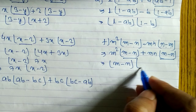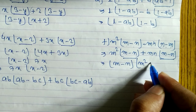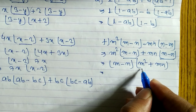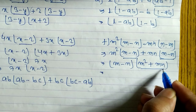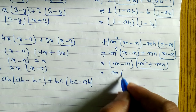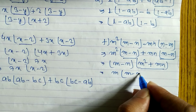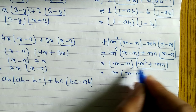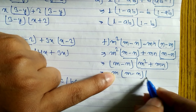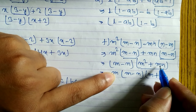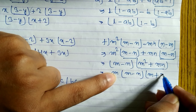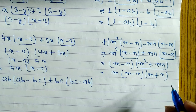Now you can see here m minus n, and here also m minus n, so we can write m minus n as common. Remaining is m² plus mn. From here again we can take m as common. When you take m common, from m² remaining is m, and from mn remaining is n. So the final answer is m(m minus n)(m plus n).